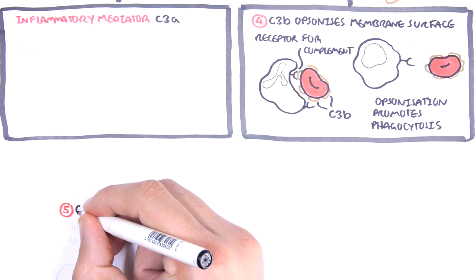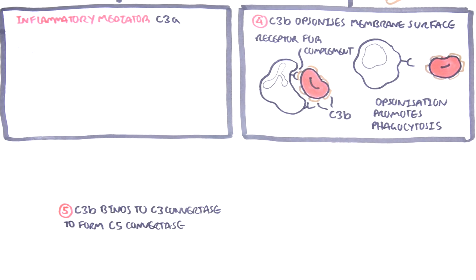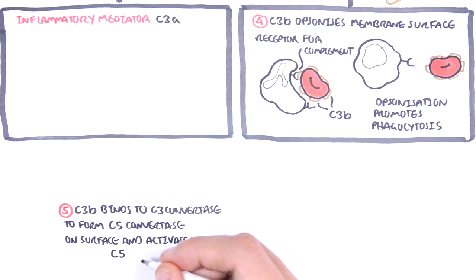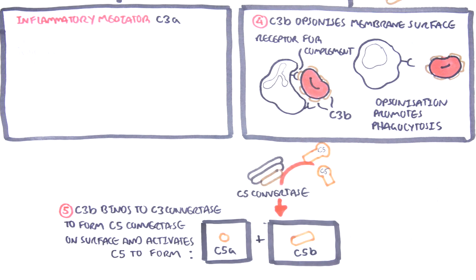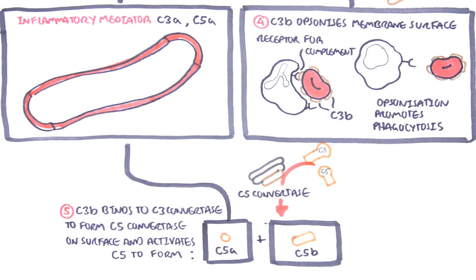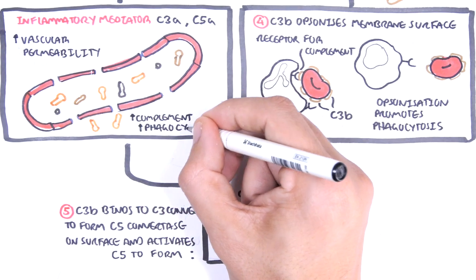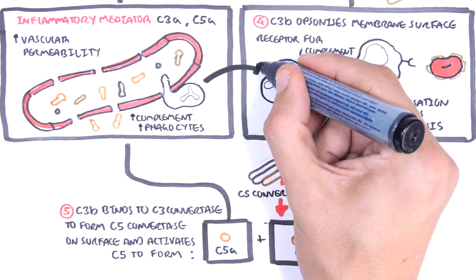C3B can also bind to C3-convertase to form C5-convertase, another enzyme. C5-convertase cleaves and activates complement 5 (C5) to become C5A and C5B. C5A is an inflammatory mediator; both C3A and C5A essentially increase vascular permeability, allowing complement proteins and phagocytes to enter the inflamed area and help engulf opsonized cells.